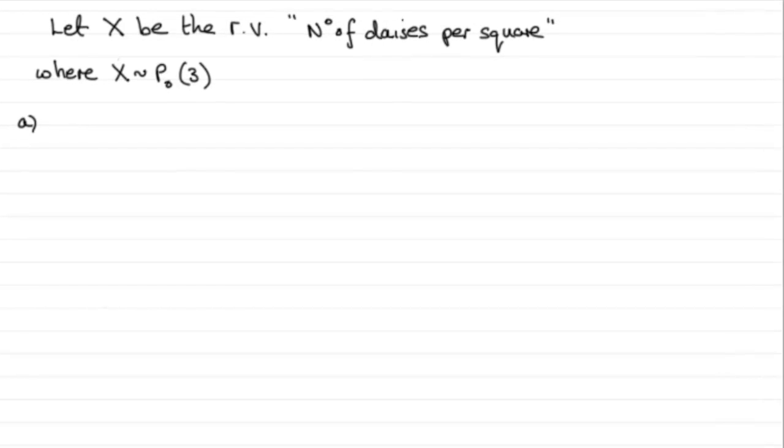Now this first part, what we've got to do is decide on the kind of distribution it is. It's got to be a Poisson distribution because the daisies are scattered at random at a mean rate in an interval of space. That space is the space of a square. So I've defined my random variable: let X be the random variable number of daisies per square where X is distributed as a Poisson distribution with mean of 3.